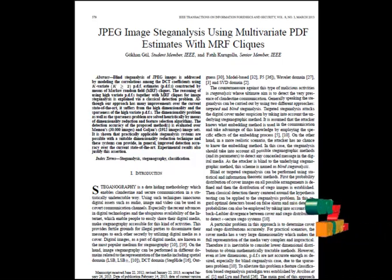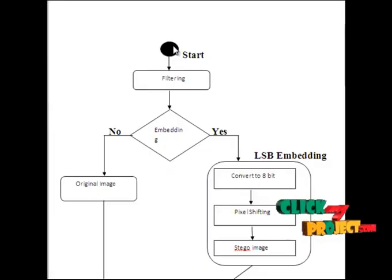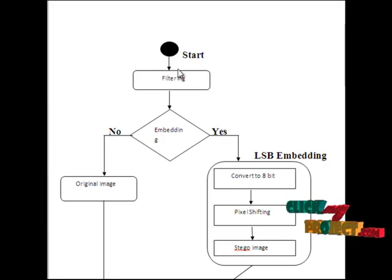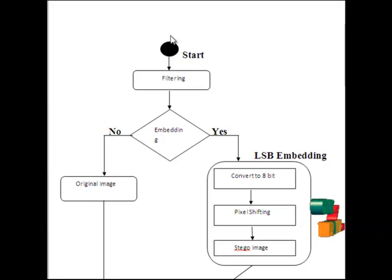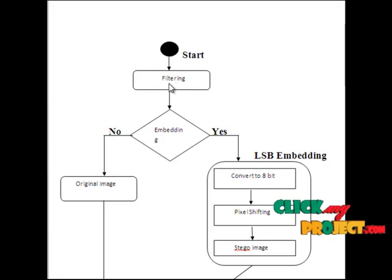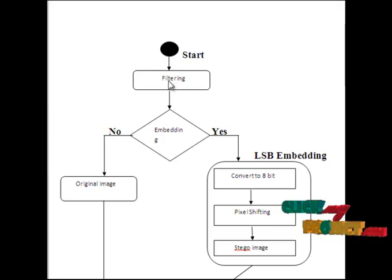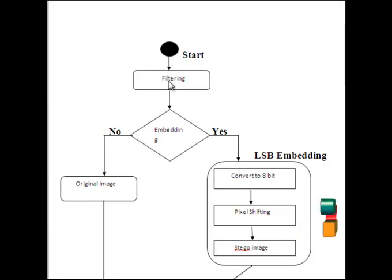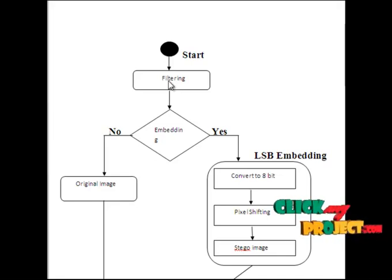One possible definition is that a random vector is said to be k-variate normally distributed if every linear combination of its k components has a univariate normal distribution. This is the flow of our process. We identify whether images are embedded or original. Initially, the input image goes to the filtering process, where we remove noise using a median filter. The median filter removes noise based on the median value of neighboring pixels.